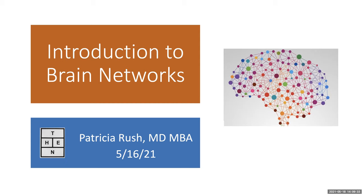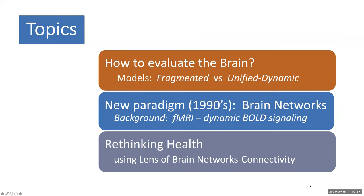Today we will study an introduction to brain networks. Our topics will include our best way to evaluate the brain, looking at different scientific models — the reductionist fragmented model versus the unified dynamic model. Second, we will review a new paradigm from the 1990s of brain networks and various imaging techniques, particularly the functional MRI, the fMRI, which uses dynamic BOLD signaling. Lastly, we will rethink physical and emotional health using the lens of brain networks and connectivity.